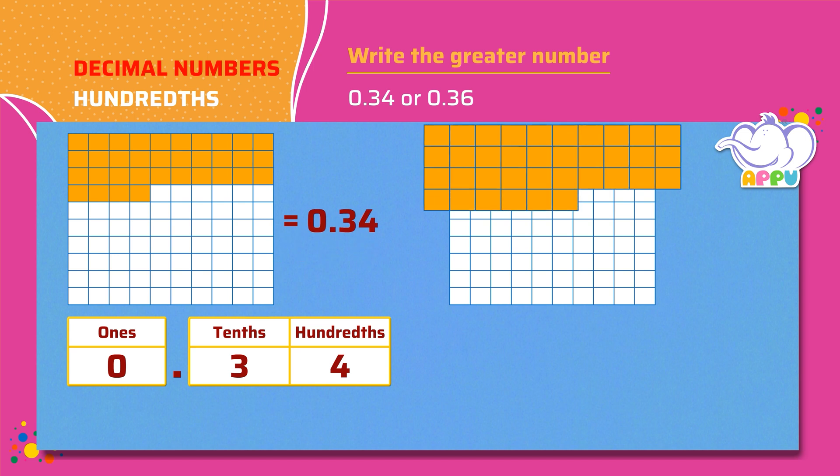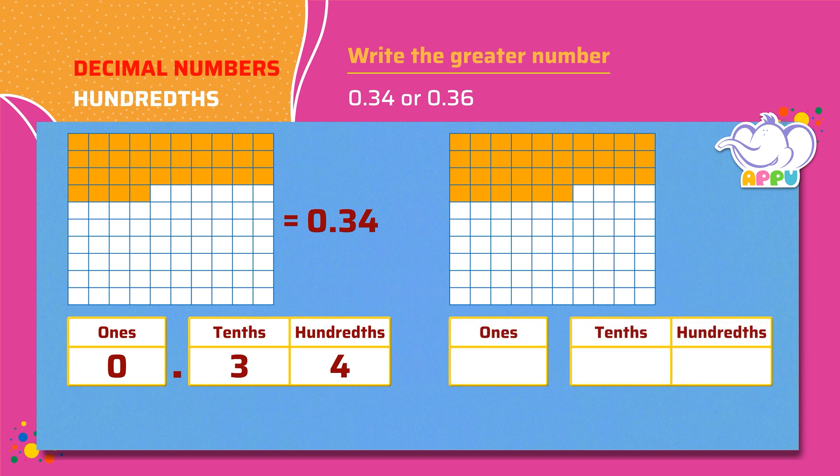36 squares are shaded out of 100 squares. We write 3 in the tenths place and 6 in the hundredths place. This is equal to 0.36.